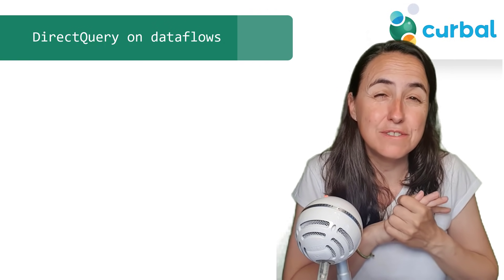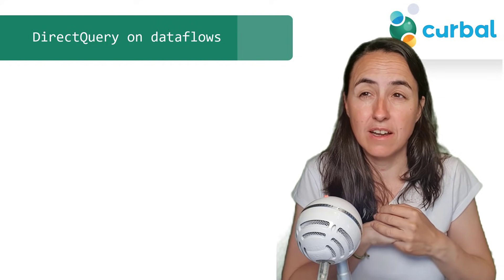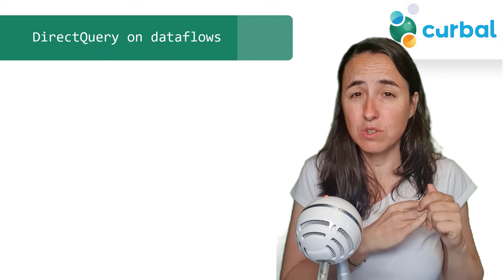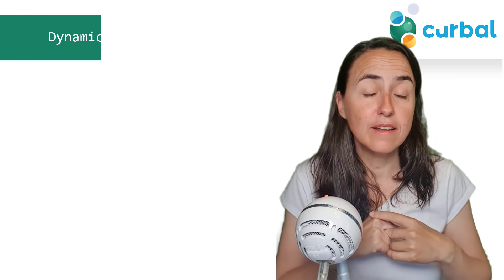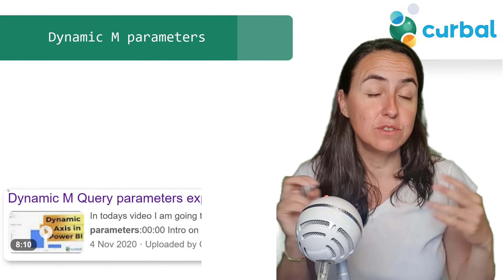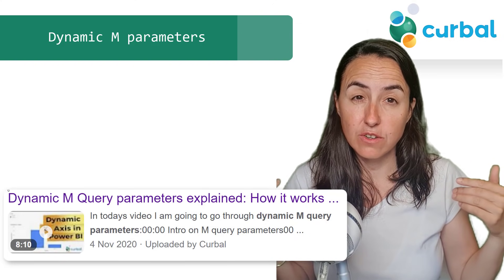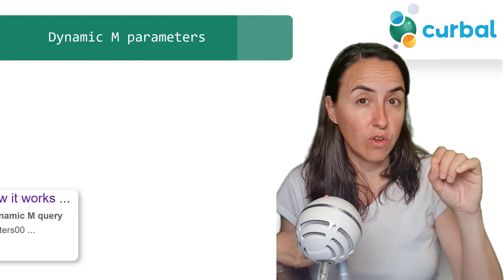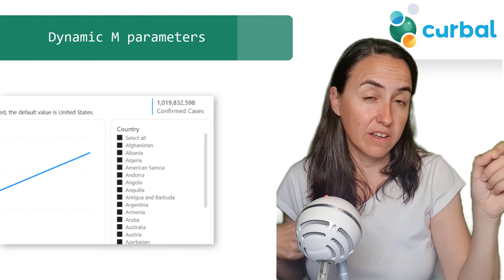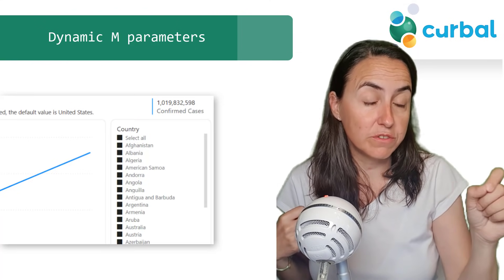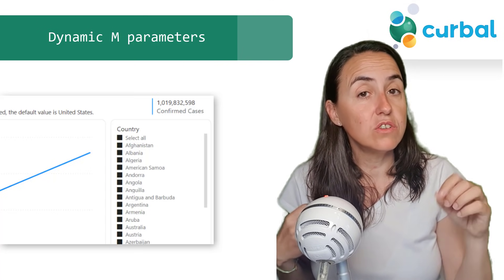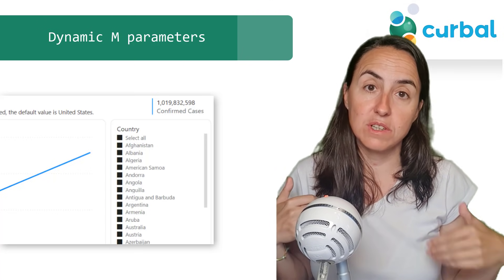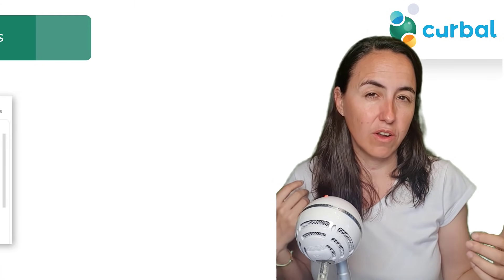Direct query is very very restrictive and I haven't been able to use it very successfully, so be careful when you do direct query. M query parameters — I've done a video on this before and I'll post a link below — it now allows for a 'select all', so it's not just a toggle. You will need to change the M code too, so make sure you check the documentation to see what you need to add in order for that to work.